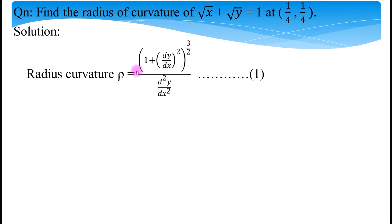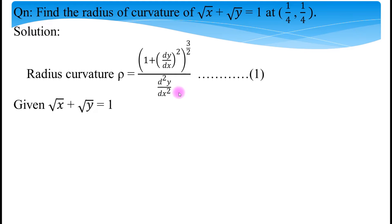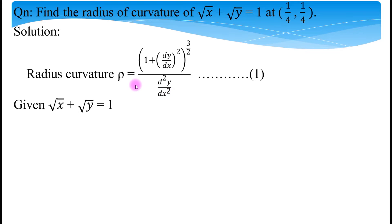The Cartesian formula is: ρ = (1 + (dy/dx)²)^(3/2) divided by d²y/dx². To use this formula, we first need two values: dy/dx and d²y/dx². From the given equation, we find dy/dx and d²y/dx², then substitute these two values into equation number 1 to get the radius of curvature.